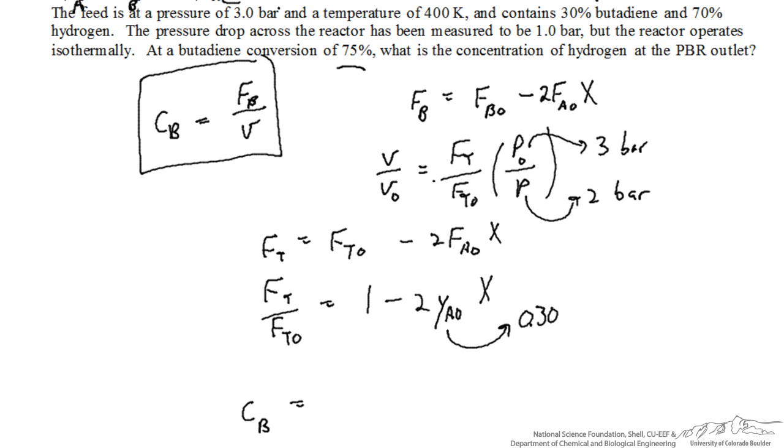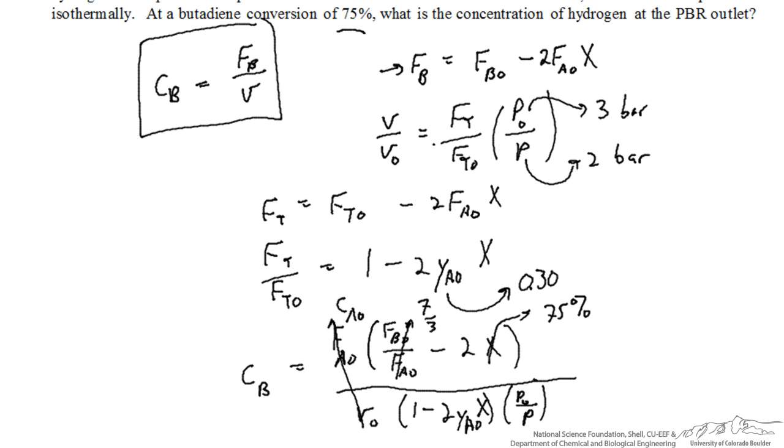Now I'm going to factor out an FA0 from the expression right here for FB, and so I'll get FA0 times FB0 over FA0 minus 2x, and then this is all over our volumetric flow rate, V0 times 1 minus 2 times YA0 times x times P0 over P.